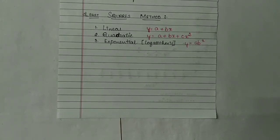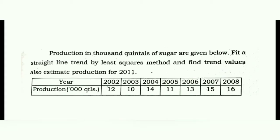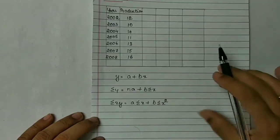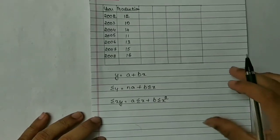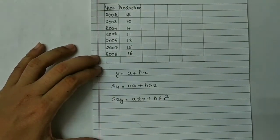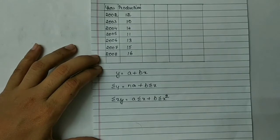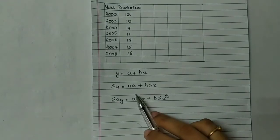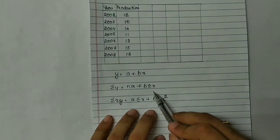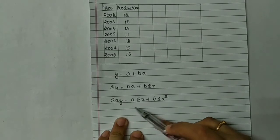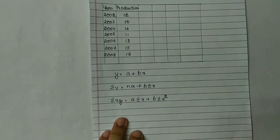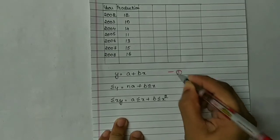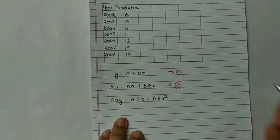Let us go for the first problem on the linear equation method. In this problem, first you should write down the equations. These equations you should always keep in mind: y is equal to a plus bx; summation y is equal to na plus b summation x; summation xy is equal to a summation x plus b summation x squared. These are the three equations — equation 2 and equation 3.